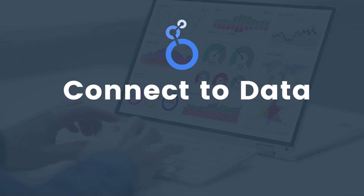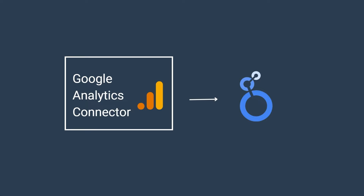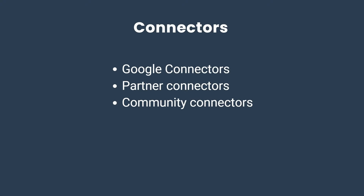Connectors fetch data from a platform and send it to LukaStudio. For example, if you had Google Analytics installed on your website and were interested in visualizing this data in LukaStudio, you could use the Google Analytics connectors. There are three types of connectors: Google connectors, partner connectors, and community connectors. Google connectors are free and give access to Google marketing products like Google Sheets, Google Analytics, and Google Ads.